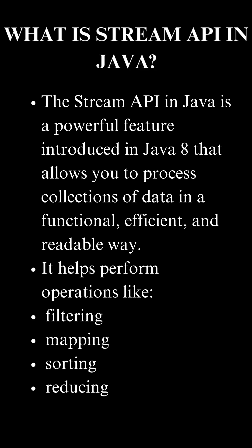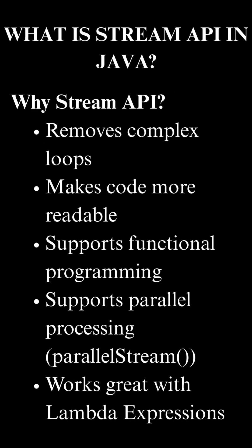It helps perform operations like filtering, mapping, sorting, and reducing data without writing loops manually. Why Stream API? It removes complex loops, it makes code more readable, it supports functional programming, supports parallel processing or parallel stream, and works great with lambda expressions.